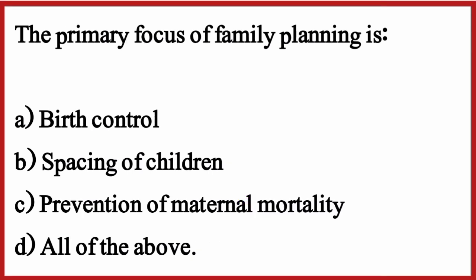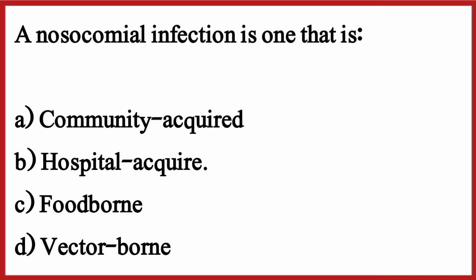The primary focus of discharge planning is — the correct option is option D: All of the above. A nosocomial infection is one that is — the correct option is option B: Hospital acquired.